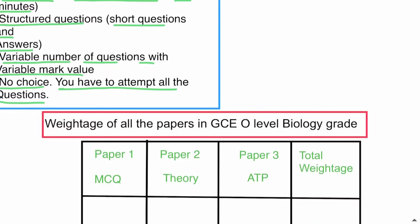Paper 1, or MCQ paper, has 30 percent weightage. Paper 2, the theory paper, has 50 percent weightage.